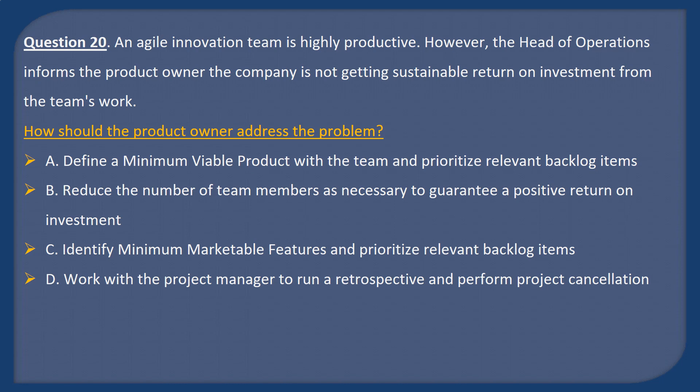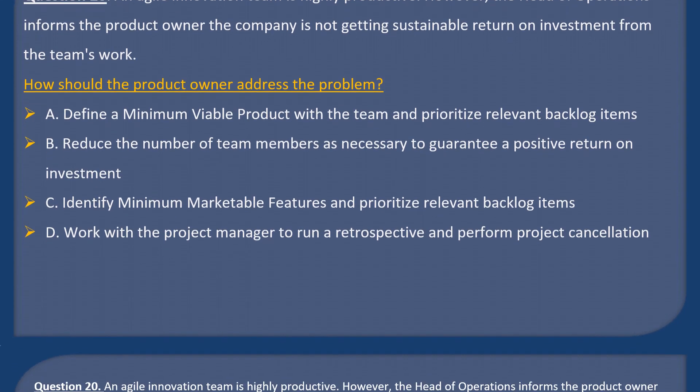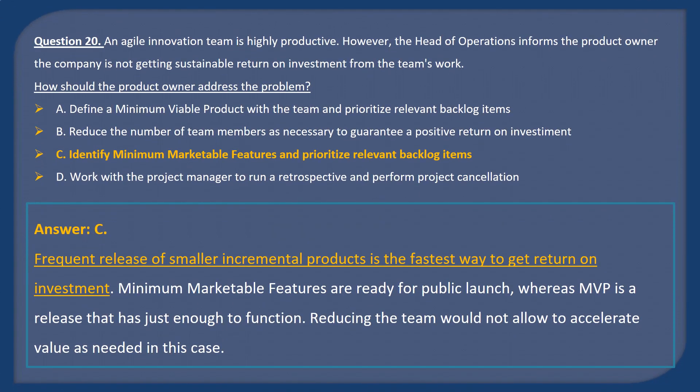Question 20. An Agile innovation team is highly productive. However, the head of operations informs the product owner the company is not getting a sustainable return on investment from the team's work. How should the product owner address the problem? A: Define a minimum viable product with the team and prioritize relevant backlog items. B: Reduce the number of team members as necessary to guarantee a positive return on investment. C: Identify minimum marketable features and prioritize relevant backlog items. D: Work with the project manager to run a retrospective and perform project cancellation.